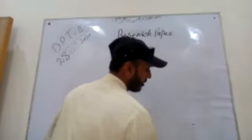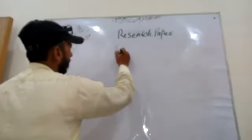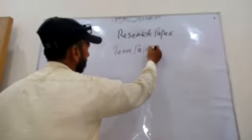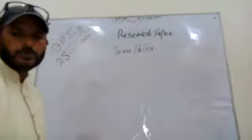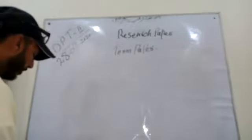Now the second part of today's demonstration is the term paper. A term paper is purely a kind of document based on your personal experience — it is the outcome of your experience at any educational institution. There are three important parts of a term paper: introduction, body, and conclusion.